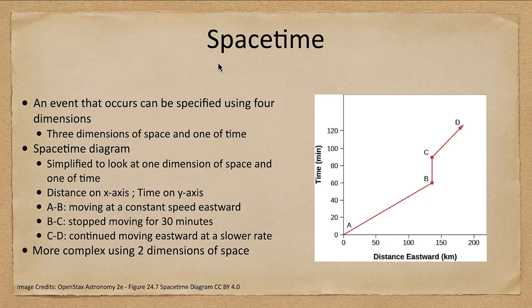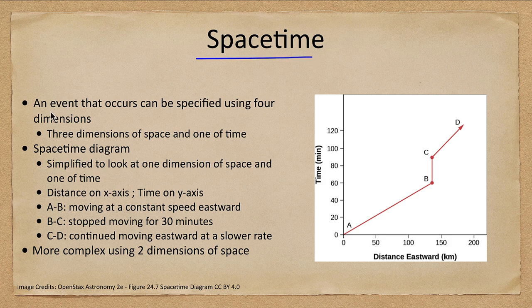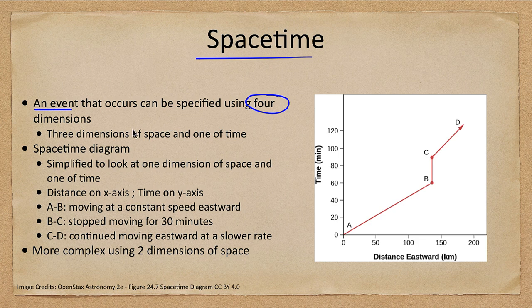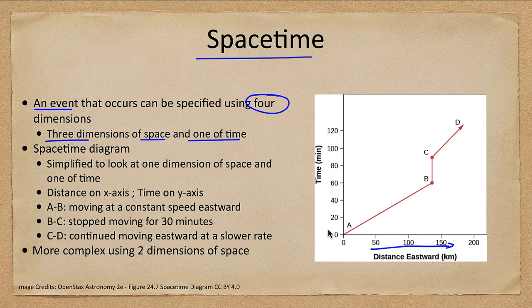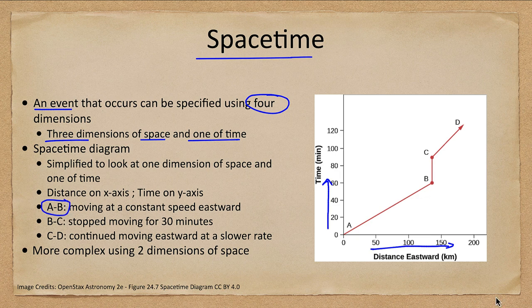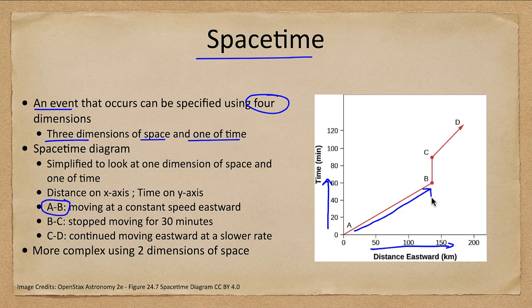So let's look at what we mean by spacetime. Spacetime, an event that occurs, can be specified using four dimensions. That's three spatial dimensions and one time dimension. And we graph that here with distance in one dimension, just looking at distance eastward on the x-axis, time on the y-axis. So what we get is between points A and B, we are traveling eastward at some rate, and we could figure that out if we wanted to by the slope of that line.